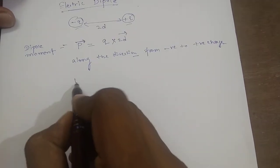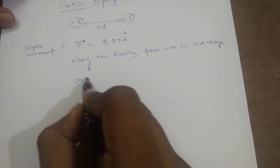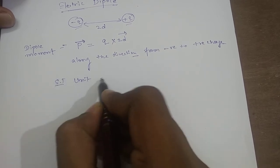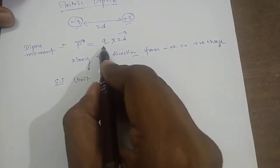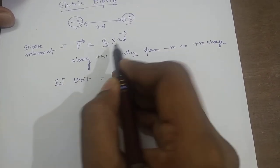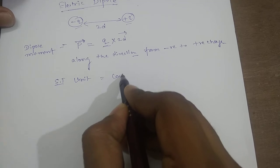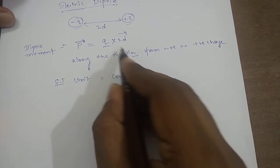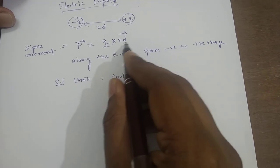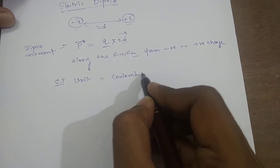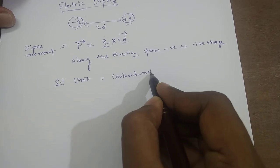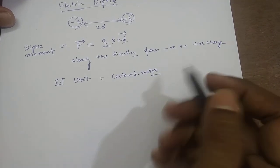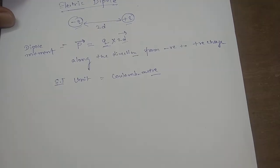So what is the SI unit of the dipole moment? The SI unit will be equal to — for the Q charge, the unit is coulomb, and this one is actually a distance, so it should be meter — coulomb meter.